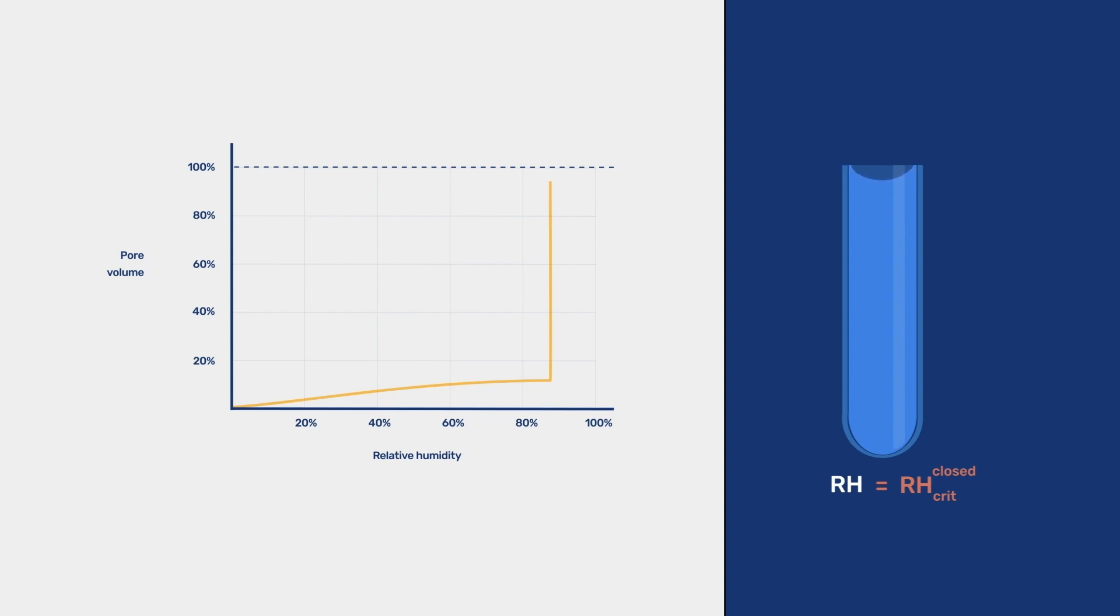At higher relative humidity, the curvature of the liquid-vapor interface flattens, but only leads to a minor increase of the filled pore volume.